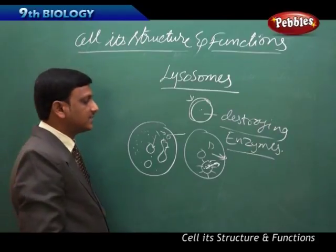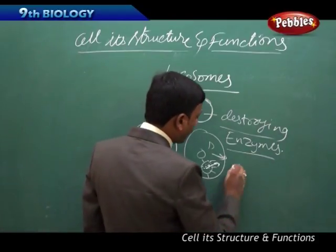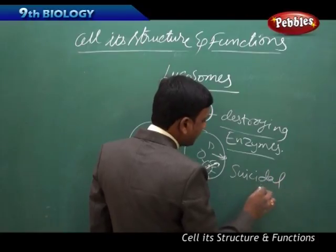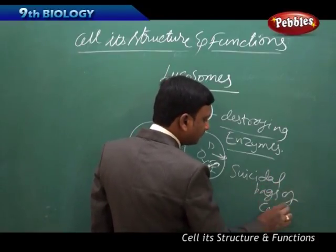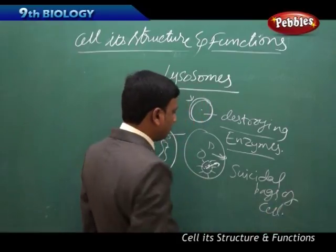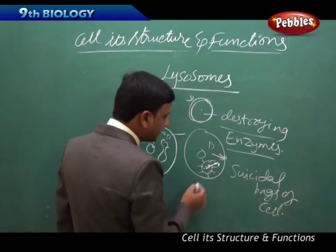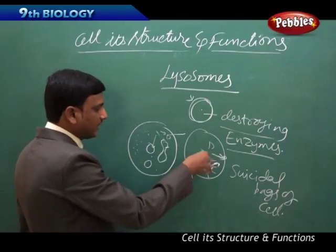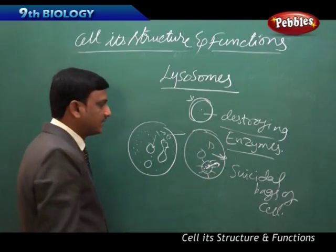That is the reason why these lysosomes are called the suicidal bags of cells. When a cell wants to destroy itself, these lysosomes break up and these destroying enzymes completely destroy the cell.